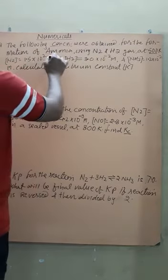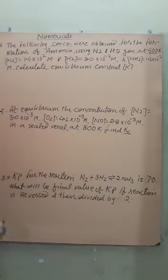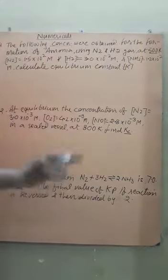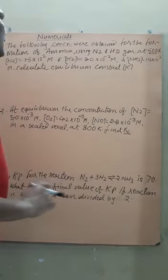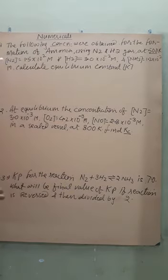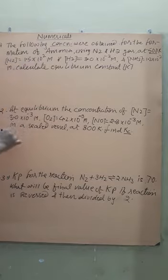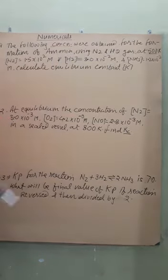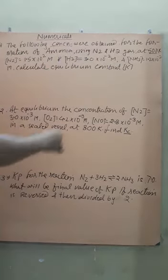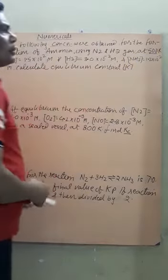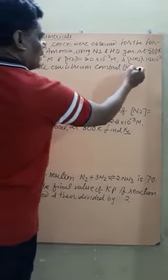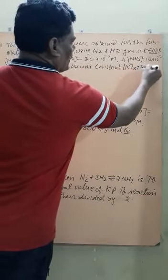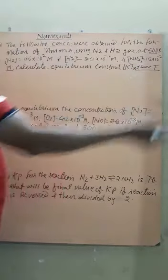The following concentrations were obtained for the reaction of formation of ammonia using nitrogen and hydrogen gas at 500 Kelvin temperature. The equilibrium constant depends only on temperature — it is independent of concentration. The molar concentration of N₂ is 1.5×10⁻², H₂ is 3.0×10⁻², and the product ammonia (NH₃) is 1.2×10⁻² M. We have to find the equilibrium constant at the same temperature.